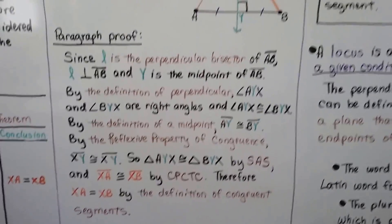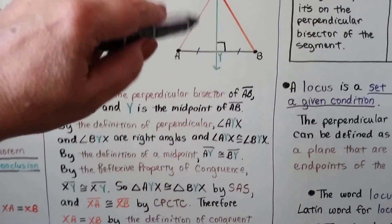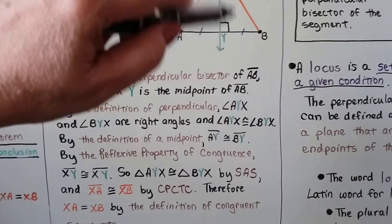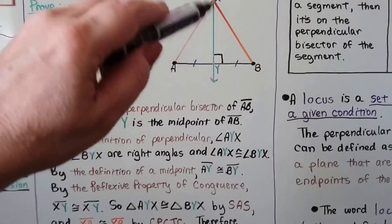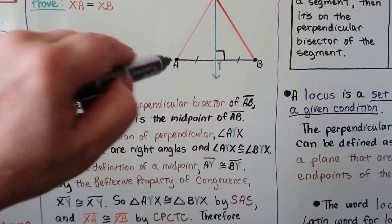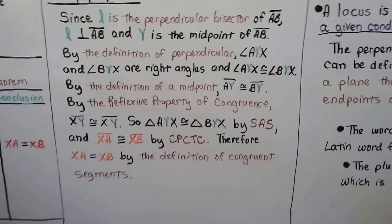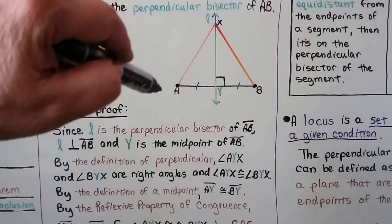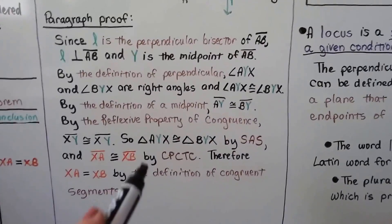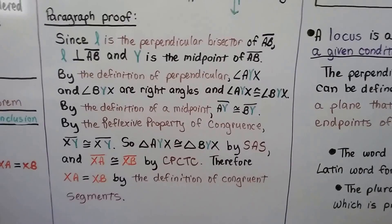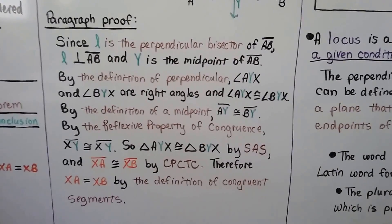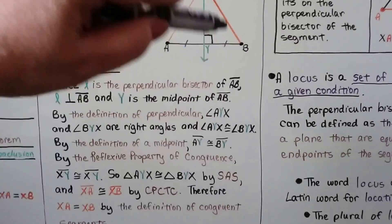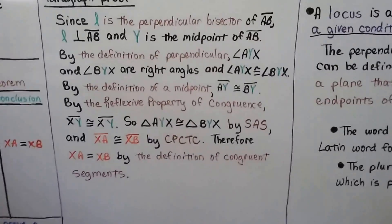Triangle AYX is congruent to triangle BYX by Side-Angle-Side (SAS) — we have a side, an angle, and a side. And segment XA is congruent to segment XB by CPCTC, that's corresponding parts of congruent triangles are congruent. Therefore, XA equals XB by the definition of congruent segments.